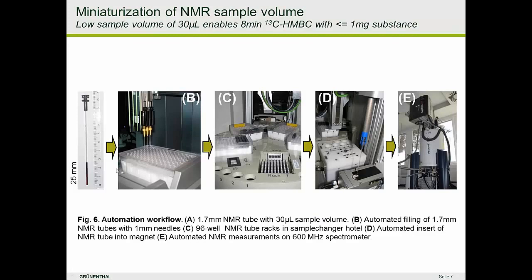Let's focus on these NMR tubes. I use unusually thin 1.7 millimeter diameter NMR tubes, which have a sample volume of just 30 microliters. That low sample volume allows me, with a substance quantity of about one milligram, to have a concentrated solution, which is good for acquiring even insensitive 2D spectra such as the carbon HSQC in a small amount of time — such as eight minutes. Small sample volume helps you record even insensitive NMR experiments quickly and also reduces residual water in your sample.